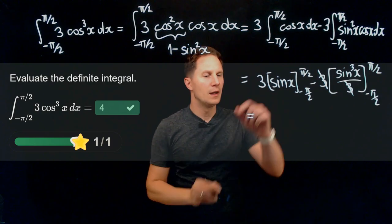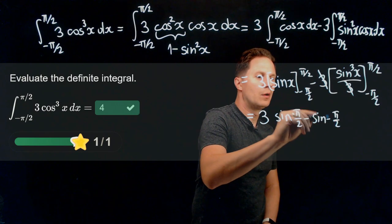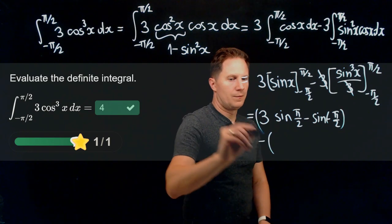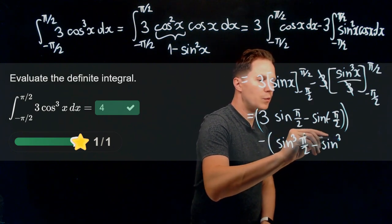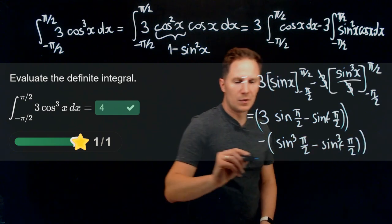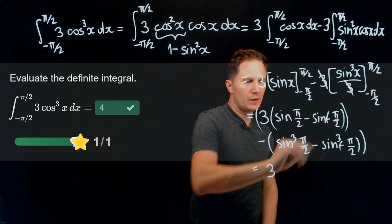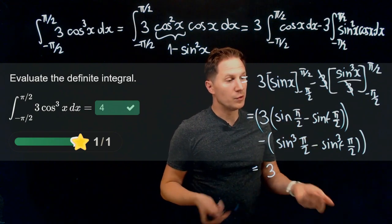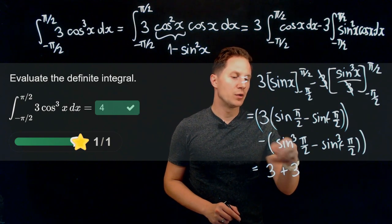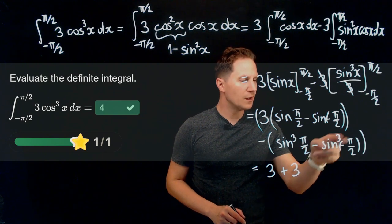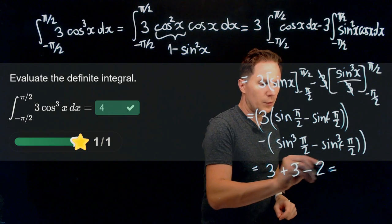So we end up with 3 times (sin(pi/2) minus sin(negative pi/2)) minus (sin cubed(pi/2) minus sin cubed(negative pi/2)). Sin(pi/2) is 1 and sin(negative pi/2) is negative 1, so the first part gives 3 times 2 equals 6. For the second part, 1 cubed minus (negative 1) cubed equals 1 minus (negative 1) equals 2, which we subtract from 6, giving 4.